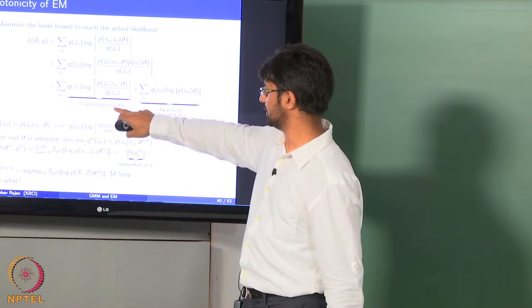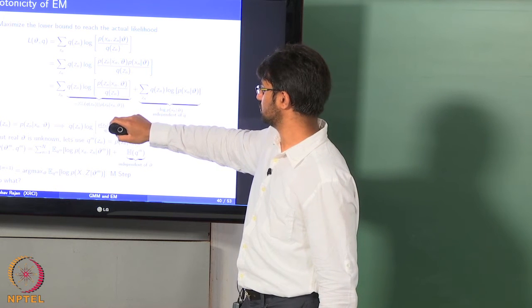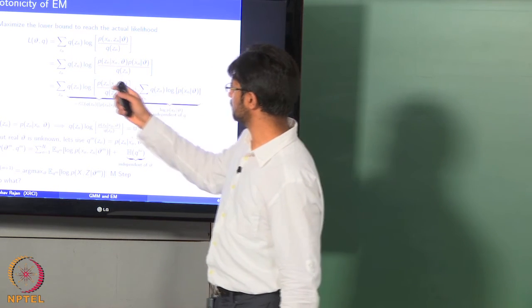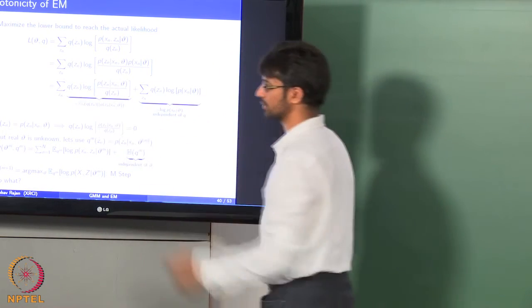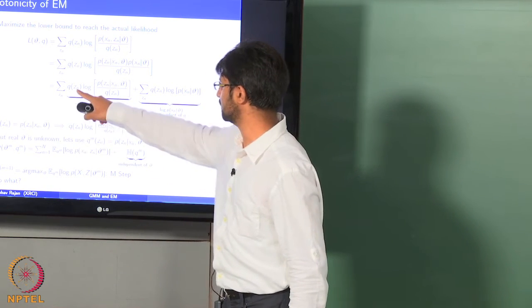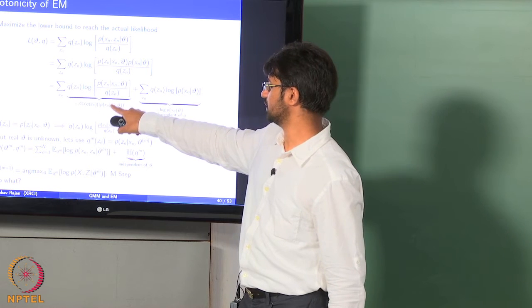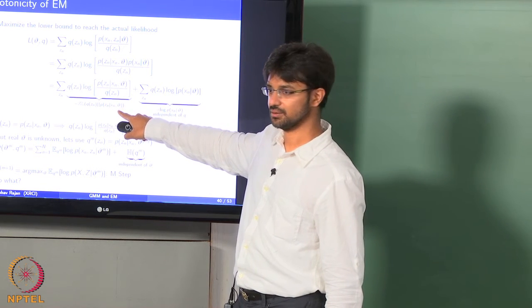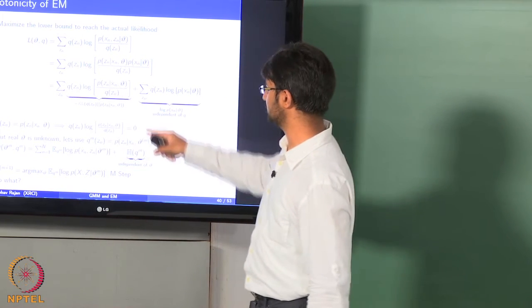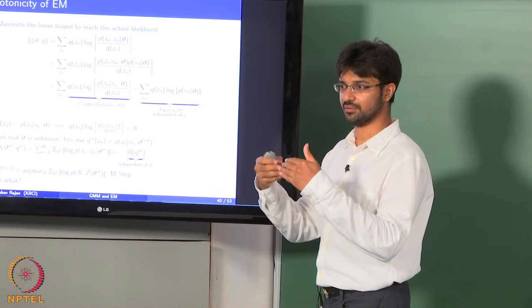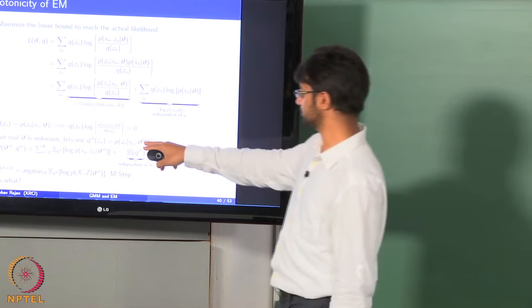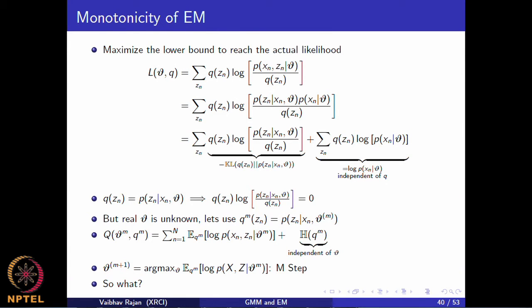We have the negative KL divergence between these two distributions. If we want the lower bound to reach the actual likelihood, we need this KL divergence term to become zero. We can do that by setting q(z_n) equal to P(z_n | x_n, θ). But we do not know the actual θ. However, in an iteration of EM, we have a guessed value θ_m, so we use that to define q_m.